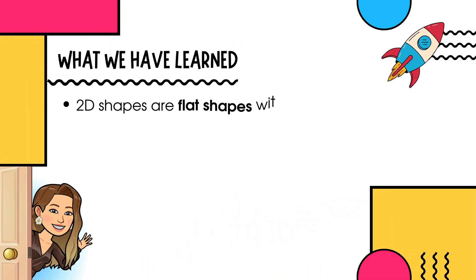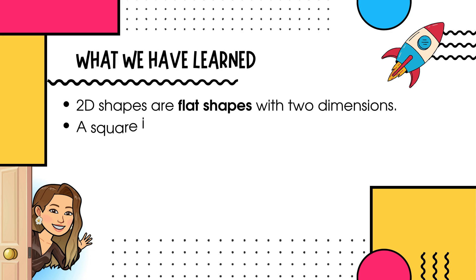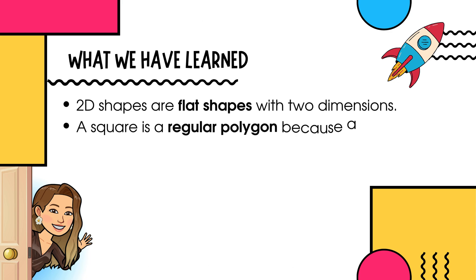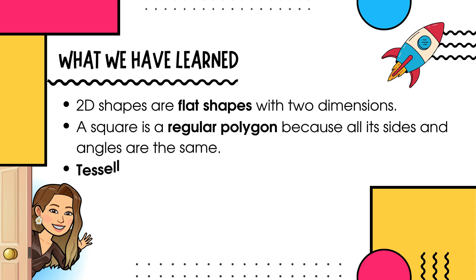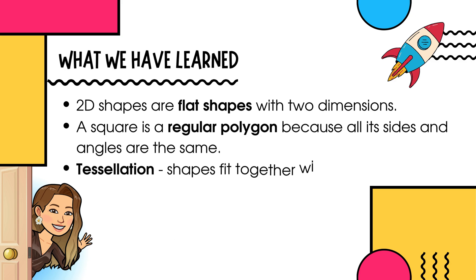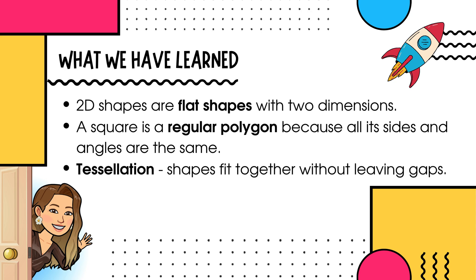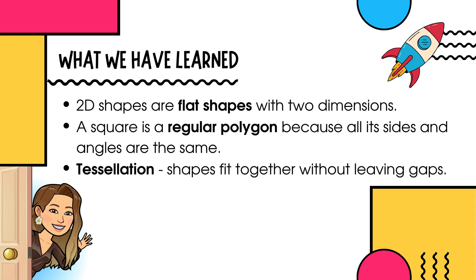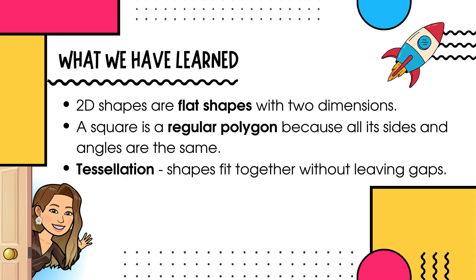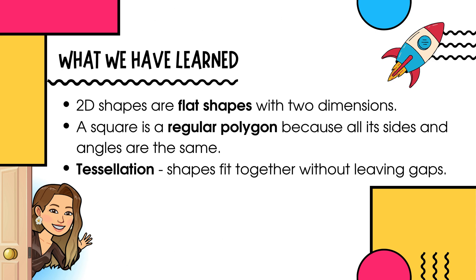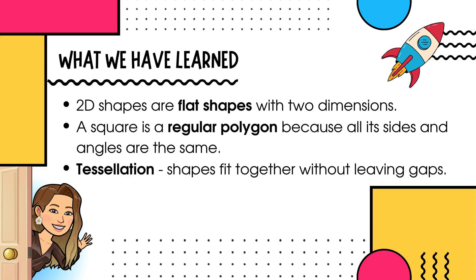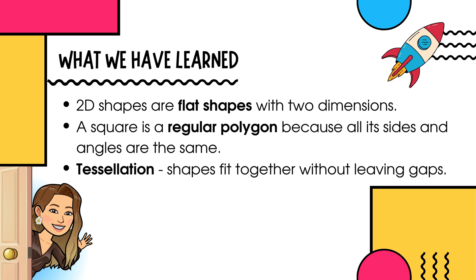Let's review what we learned today. We learned that 2D shapes are flat shapes with two dimensions. We talked about the properties of shapes, like how a square is a regular polygon because all its sides and angles are the same. We also explored tessellation, where shapes fit together without leaving gaps. Thank you for learning with me today — see you next time!